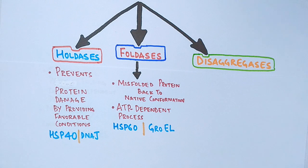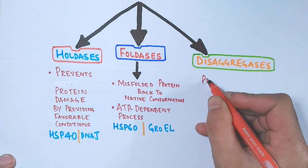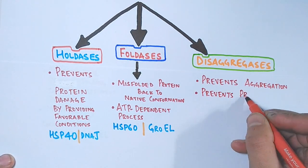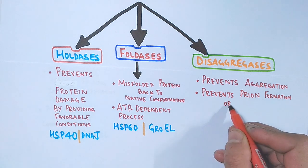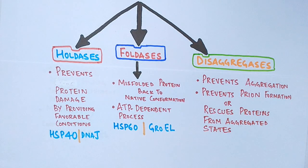Then finally we have disaggregases. These are the chaperones that prevents aggregation, prevents prion formation or rescues proteins from aggregated states. One of the examples of disaggregated chaperones is HSP104 protein that is found in yeasts.